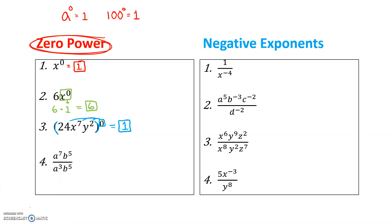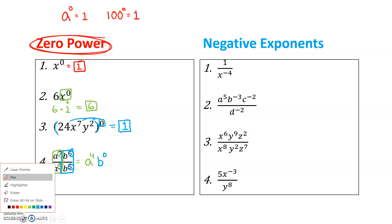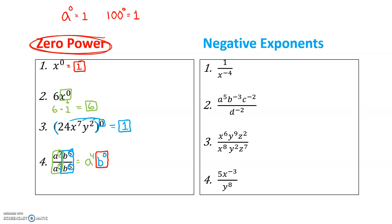One more — this time we're dealing with a quotient, so let's take it one piece at a time. A to the seventh divided by a to the third: subtract the exponents when dividing, so 7 minus 3 gives us a to the fourth. Then b to the fifth divided by b to the fifth: 5 minus 5 gives us b to the zero power. That zero only belongs to the b, so b to the zero power turns into one. Bringing down a to the fourth, we have a to the fourth times one, which is just a to the fourth.